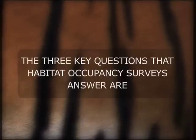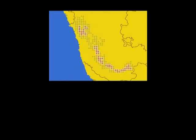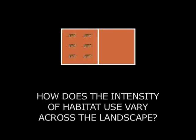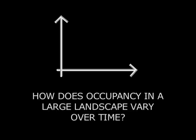The three key questions that habitat occupancy surveys answer are: 1. What proportion of the habitat in the overall landscape is occupied? 2. How does the intensity of habitat use vary across the landscape? 3. How does occupancy in a large landscape vary over time?